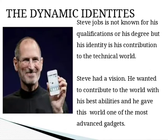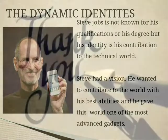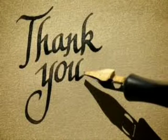A well-known example of dynamic identity is Steve Jobs. Steve Jobs is not known for his qualification or degree, but his identity is his contribution to the technical world. He had a vision — he wanted to contribute to the world with his best ability, and he gave the world one of the most advantageous innovations. I hope some of you are also using it. Thank you all.